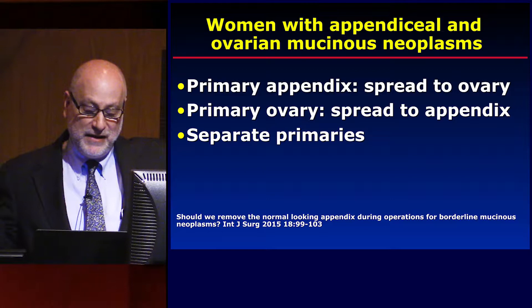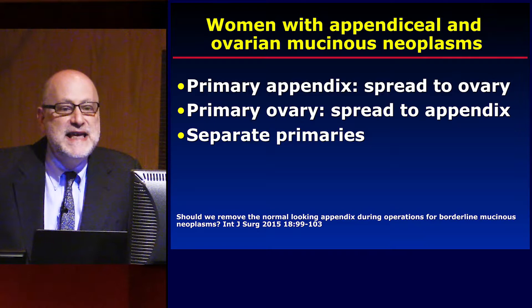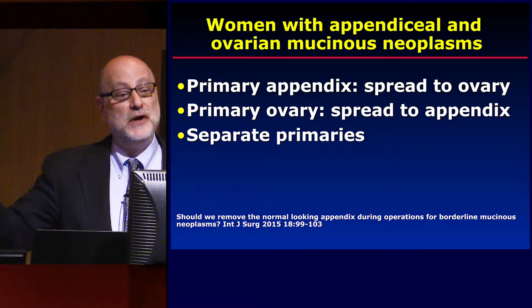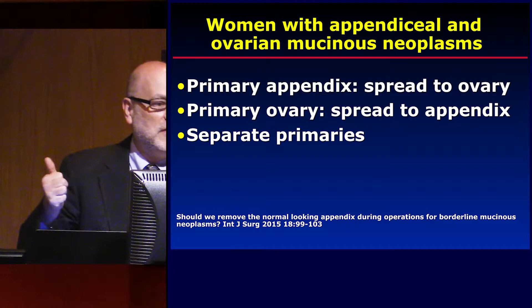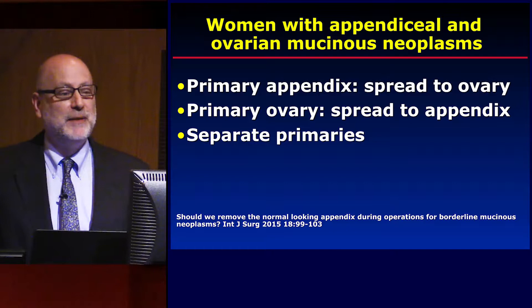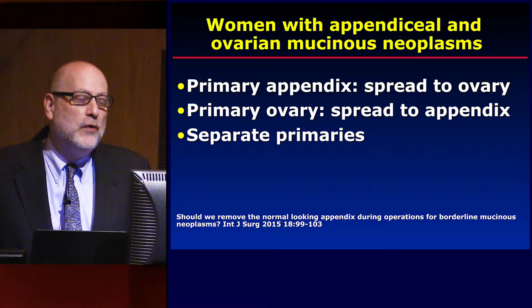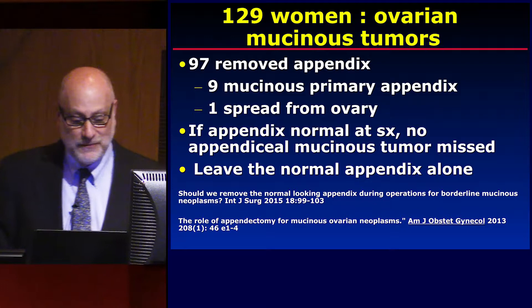One of three things might happen when I have a woman who has both an appendiceal neoplasm and an ovarian mucinous neoplasm: did the appendix spread to the ovary, the ovary spread to the appendix, or are they separate primaries? The most common scenario is the first — a mucinous neoplasm of the appendix spreads down into the peritoneal cavity onto one or both ovaries. Every time I see a mucinous neoplasm of the ovary, I feel obligated to look at the appendix. The pathologist will call into the operating room and say the patient has a mucinous ovarian neoplasm — please evaluate the appendix to make sure we're not missing an appendiceal neoplasm.